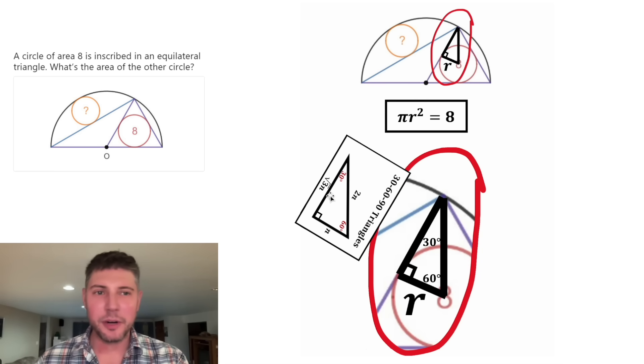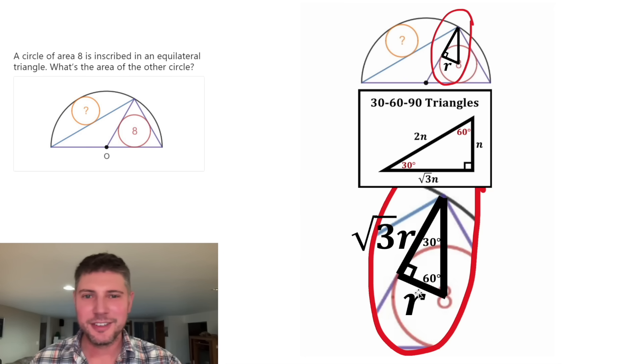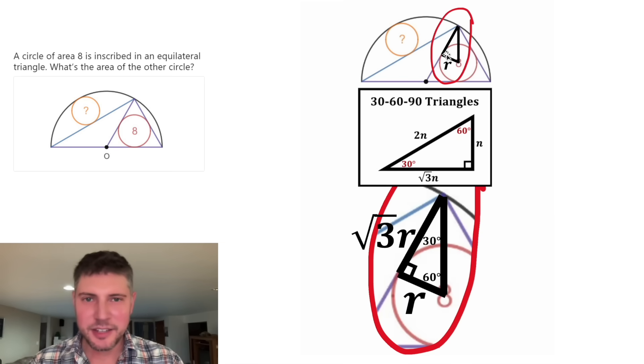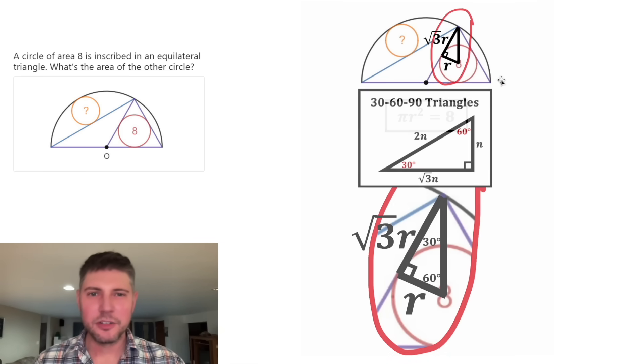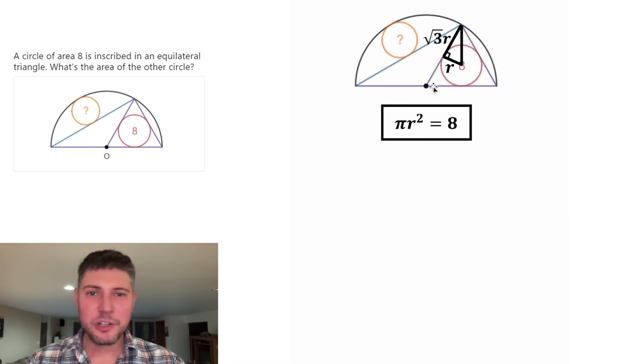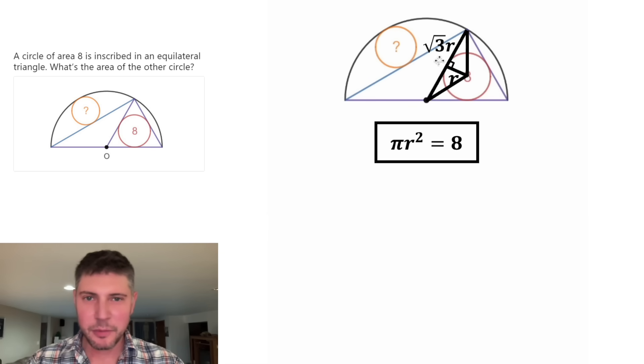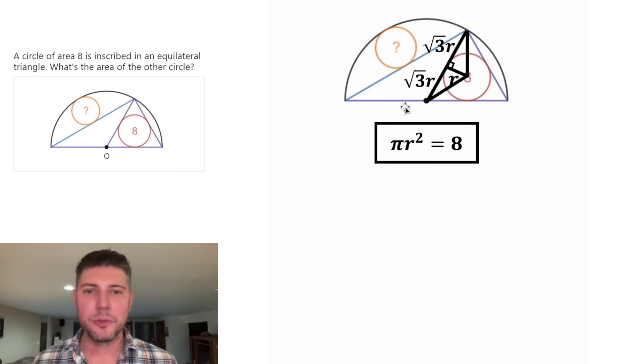So since this shortest side is r, the medium side is going to be square root of three times r. And that multiplied by square root of three relationship is true for all 30-60-90 triangles. This side here is the same thing as this side, so let's make this √3r. And now I think we're done zooming in. And because of the symmetry of an equilateral triangle, we could do the same thing down here, and we'd find out that this side is also √3r.